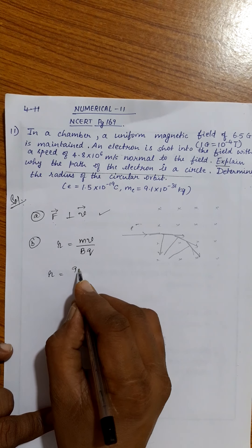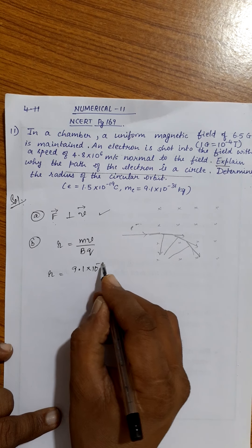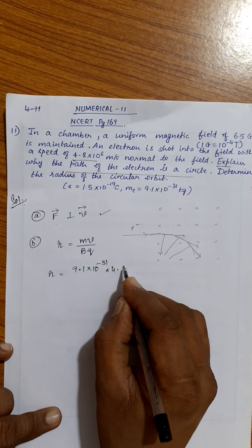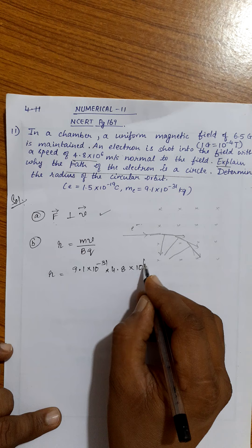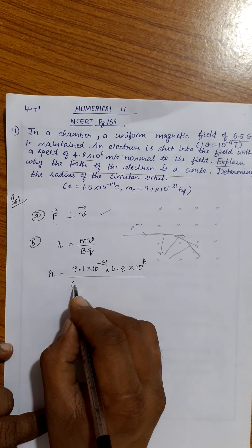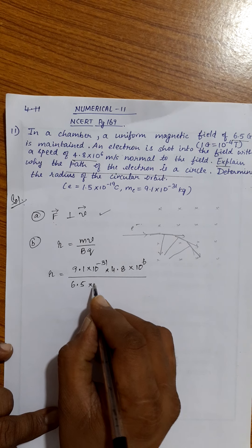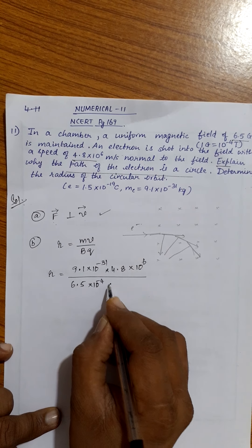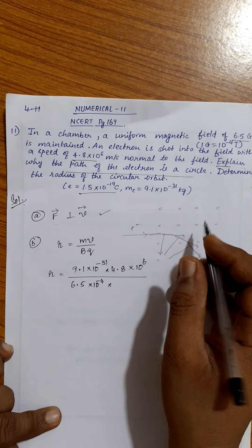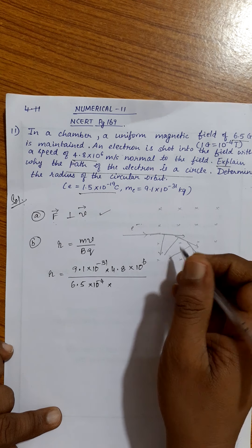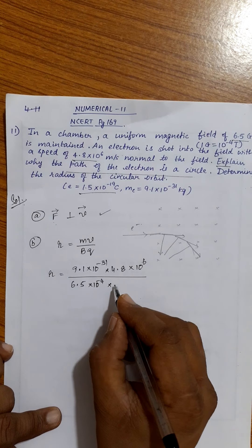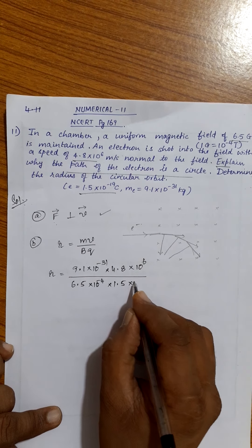Mass of the electron is given to you as 9.1 into 10 power minus 31. Speed is given to you as 4.8 into 10 power 6, divided by magnetic field is 6.5 gauss. Gauss to be converted to Tesla 10 power minus 4. Charge of the electron, actually it would be 1.6 into 10 power minus 19, but they have given it as 1.5. As is given, we have to take 1.5 into 10 power minus 19.